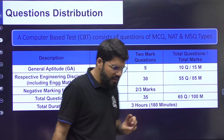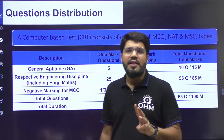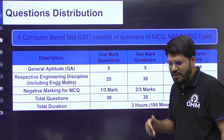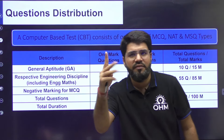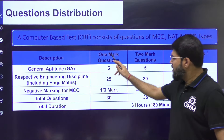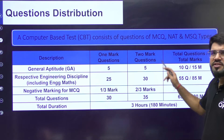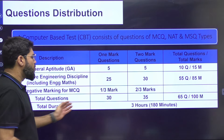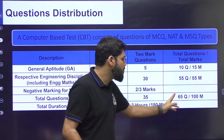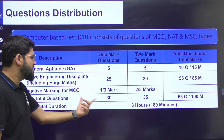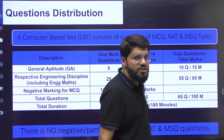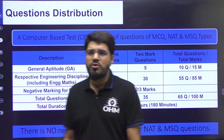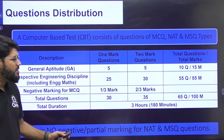Regarding negative marking: there are three varieties of questions, and negative marking applies only to MCQ (multiple choice questions). For a one-mark MCQ, the negative mark is one-third. For a two-mark MCQ, the negative mark is two-thirds. There is no negative marking or partial marking for NAT (numerical answer type) or MSQ (multiple select question) questions.